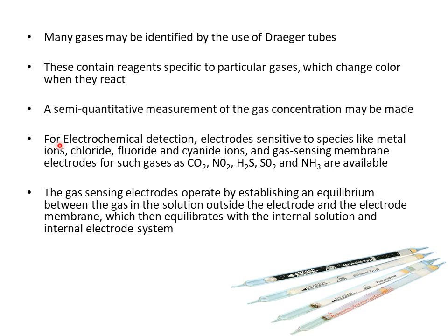For electrochemical detection, electrodes sensitive to species like metal ions, chlorides, fluorides, and cyanide ions are available. Gas-sensing membrane electrodes are available for gases such as carbon dioxide, nitrogen dioxide, hydrogen sulfide, sulfur dioxide, and ammonia. These gas-sensing electrodes operate by establishing an equilibrium between the gas in solution outside the electrode and the electrode membrane, which then equilibrates with the internal solution and internal electrode system.